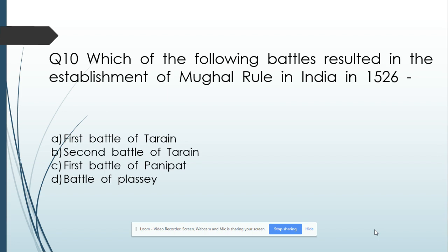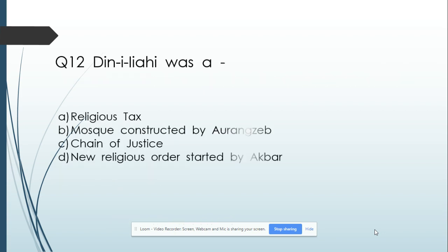Question number 10: Which of the following battles resulted in the establishment of Mughal rule in India in 1526? Option A: First Battle of Tarain. Option B: Second Battle of Tarain. Option C: First Battle of Panipat. Option D: Battle of Plassey. And its answer is the First Battle of Panipat.